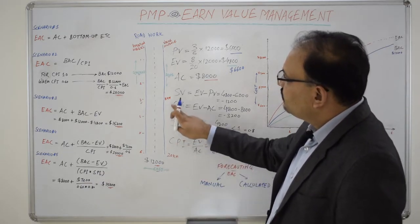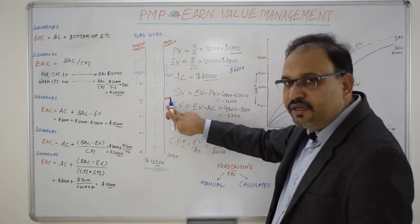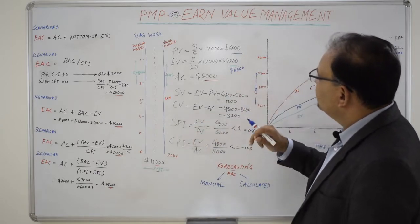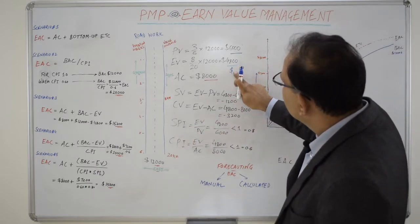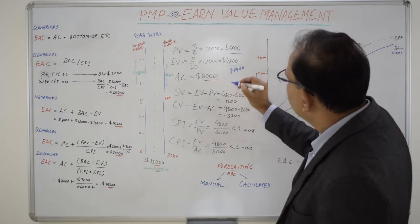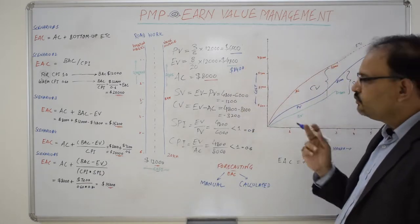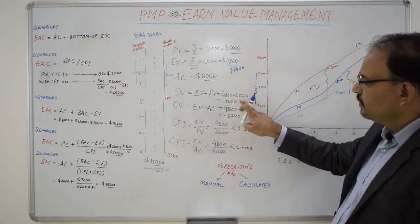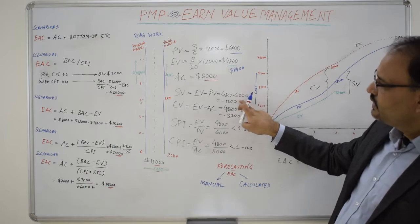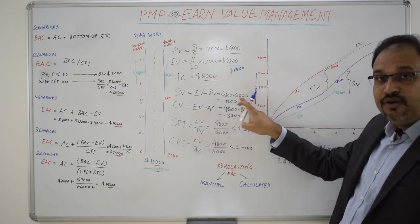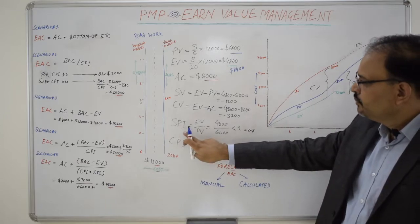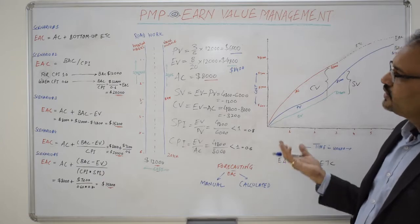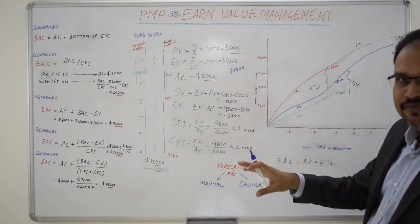In another scenario, had the project completed 14 kilometers of the road after three weeks, the Earned Value would have been $8,400. That would have represented that both Schedule Variance and Cost Variance would have been positive values, showing that the project is performing well on the schedule as well as cost front. Similarly, both CPI and SPI would have been greater than one. Now we stick to our original example to discuss the forecasting methods.